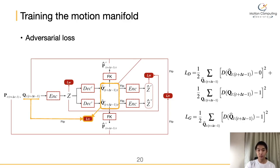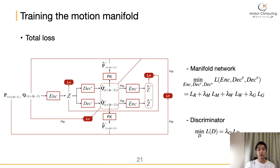Lastly, we employ the least-squares generative adversarial network loss LSGAN to promote the motion generated by our model to be indistinguishably similar to real motion, where the discriminator D tries to distinguish between the reconstructed motions and the real motions. Therefore, the total objective loss function of the motion manifold network is as follows. We jointly train the encoder, joint rotation decoder, joint velocity decoder, and discriminator to optimize the total objective function.